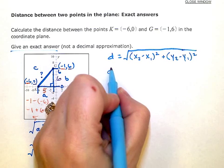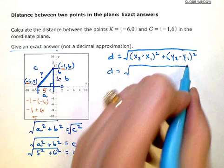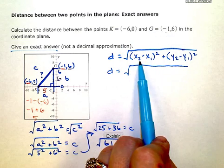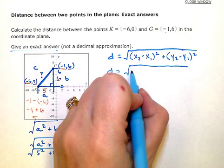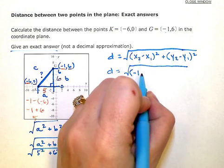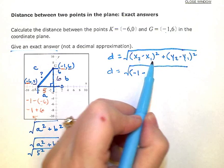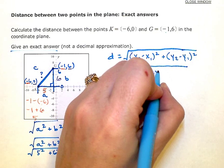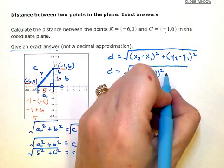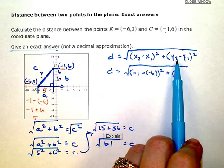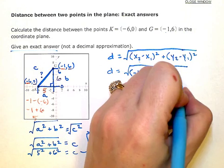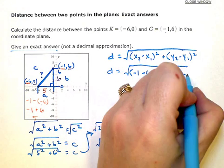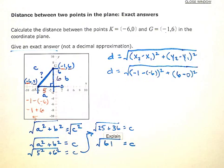So I can just plug my numbers into here. So the distance is equal to the square root of, subtract the x values. So x of the second point is negative 1 minus x from the first point, or negative 6, squared. Plus, take the y from your second point, or 6, and subtract the y value from your first point, which is 0. And then we're going to square that. And then we just simplify.